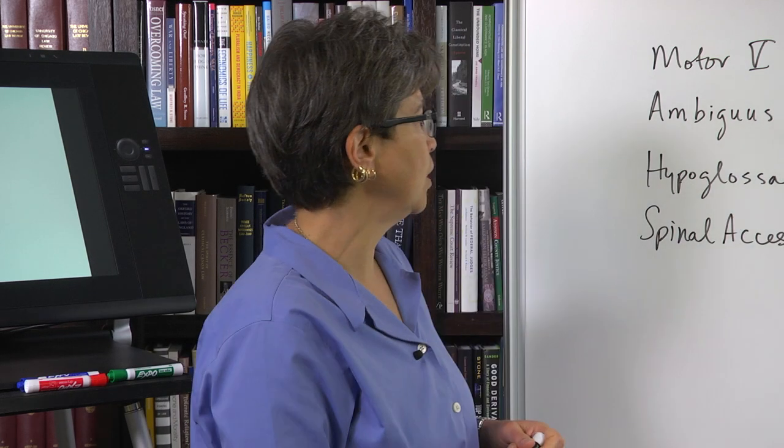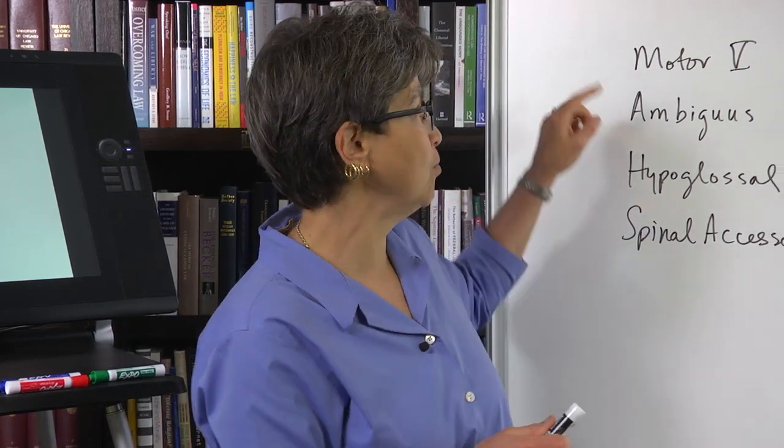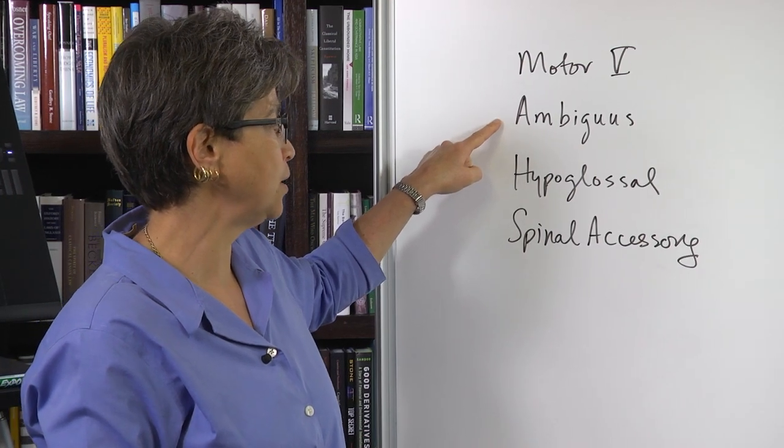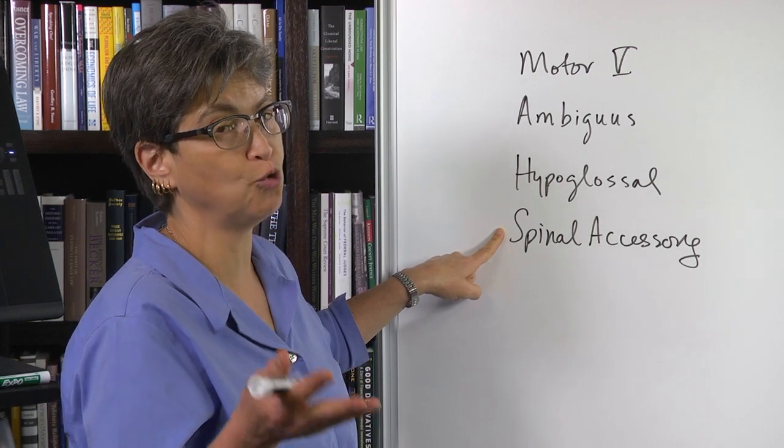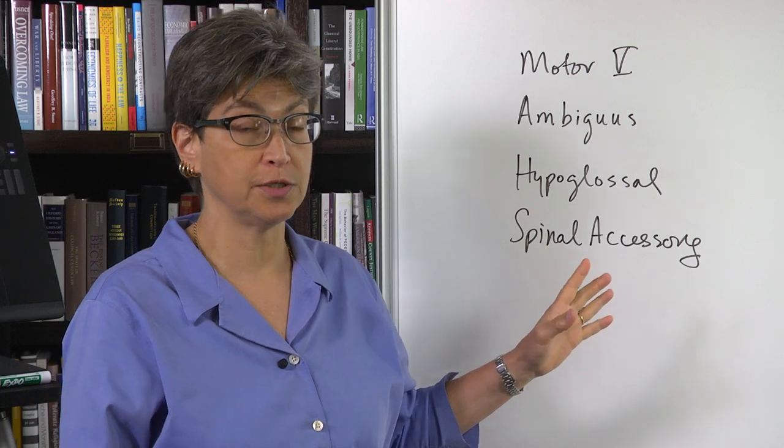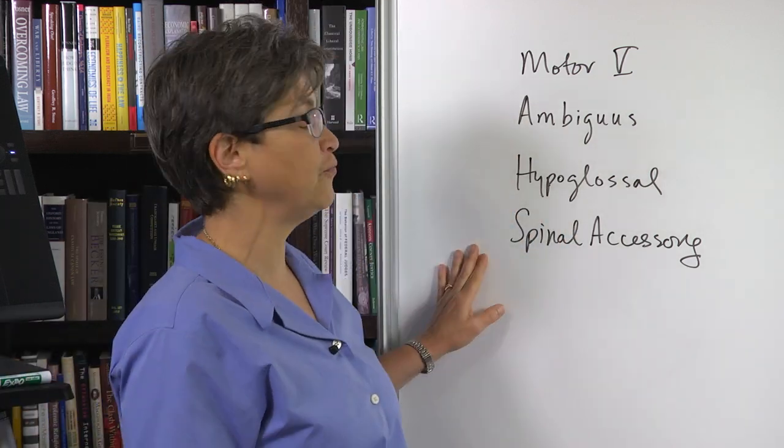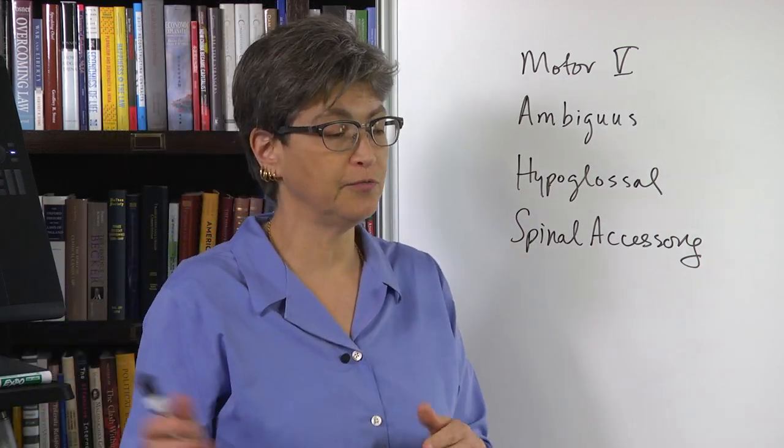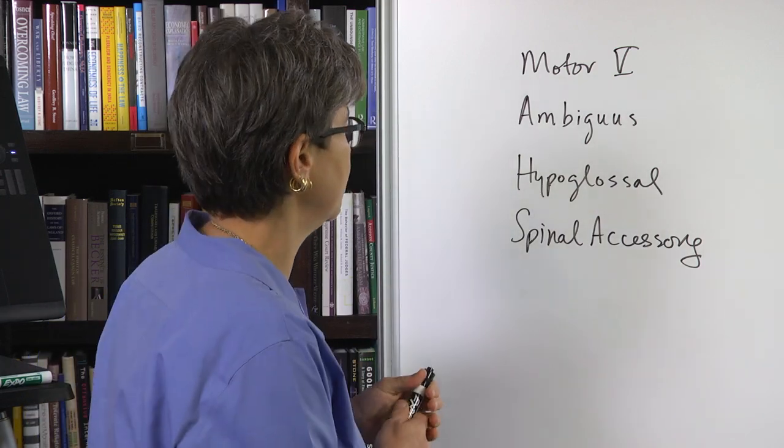There are five targets of the corticobulbar tract: motor trigeminal, nucleus ambiguous, the hypoglossal nucleus, and the spinal accessory nucleus, which is essentially the ventral horn of the cervical cord. The fifth one is the facial nucleus, which we're going to talk about separately. We're just going to talk about the four straightforward ones and leave the facial nucleus, which is a colossal topic, for the next video.